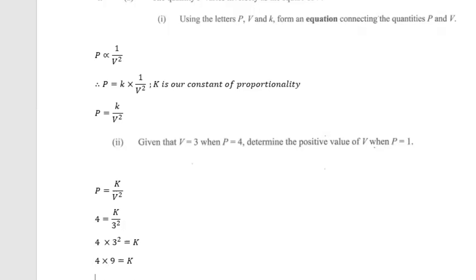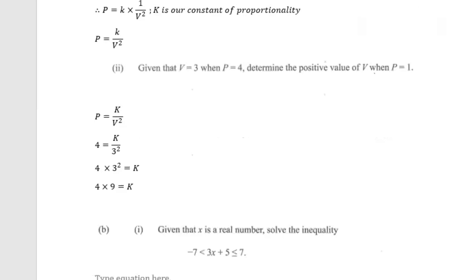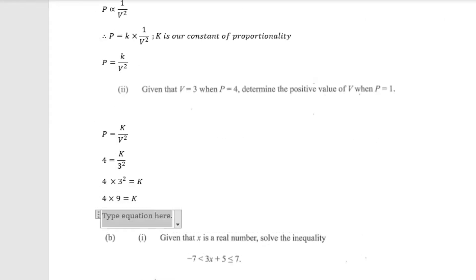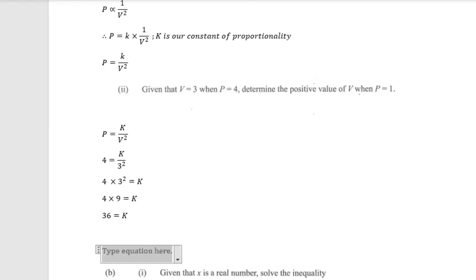What we're doing first is finding the value of k, our constant. After that we can find any value for p or v when given. So 9 multiplied by 4 is 36, which equals k. Our constant k is 36. Now that we know k, we can find the value of v when p equals 1.